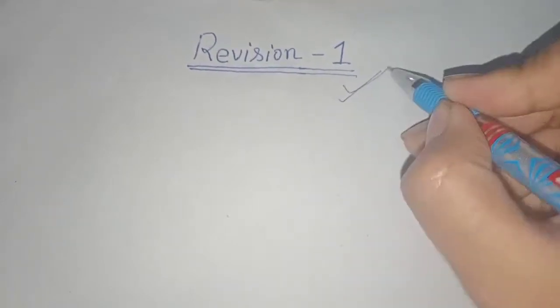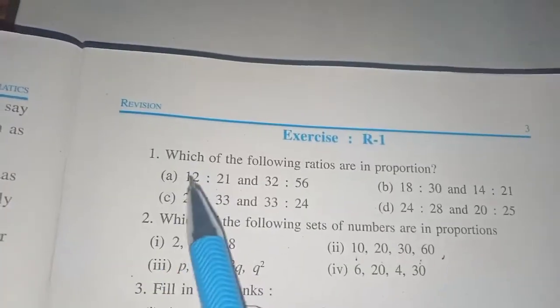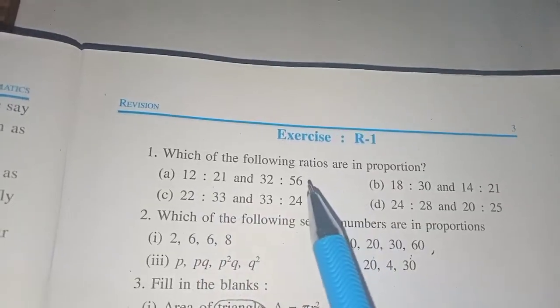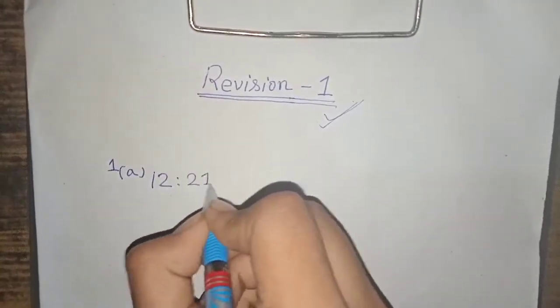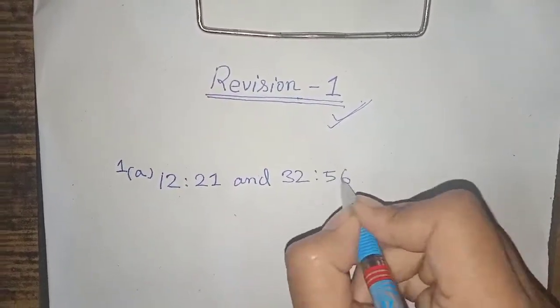I will start with revision number 1. The following ratios are in proportion. I will start with the first one: 12 to 21 and 32 to 56.